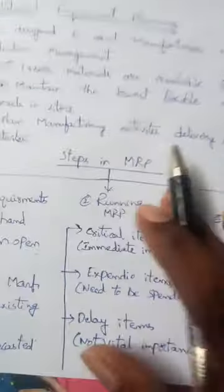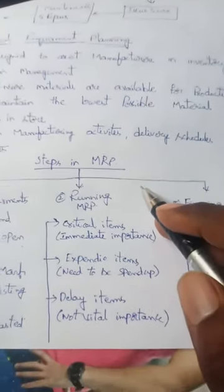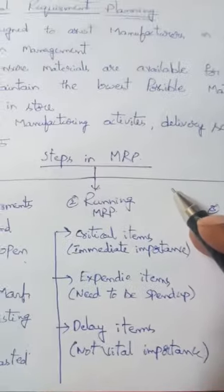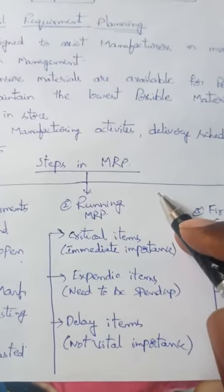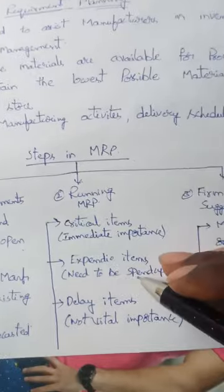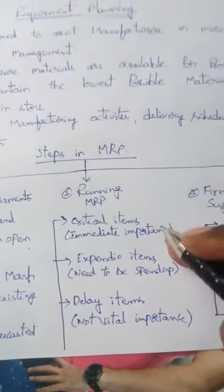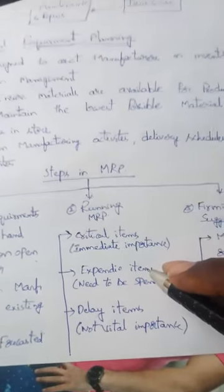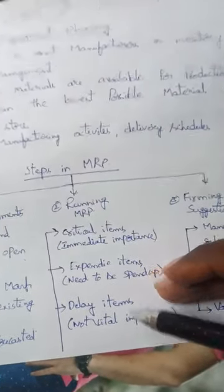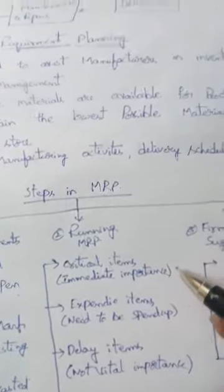The next step is running MRP — Material Requirement Planning — which is categorized into three types: critical items, expensive items, and delay items. Critical items are particular raw materials where maintenance is a top priority, mandatory for the manufacturing process without any delay. Expensive items need to be prioritized and, while not as critical, are also important for effective product manufacturing. Delay items may not be of vital importance, but using them can increase efficiency.